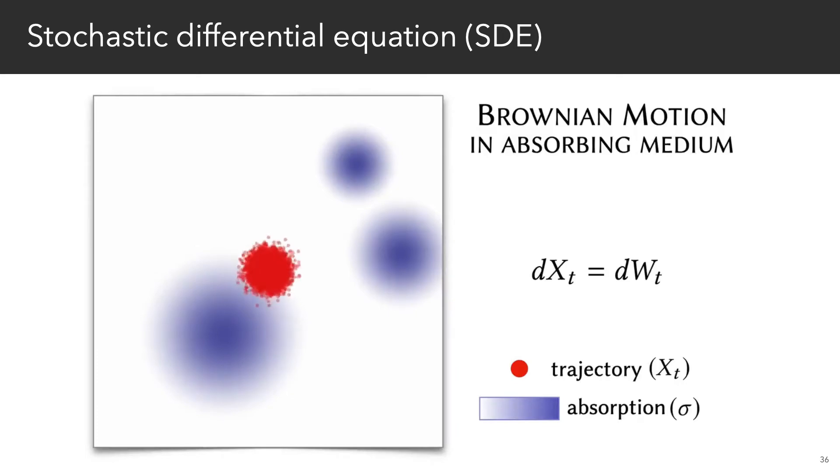We can also modulate the strength of jiggling via a function alpha. As alpha increases, things heat up and particles move faster. Finally, we can think about a random walker possibly getting absorbed in a background medium, like ink getting soaked up in a sponge. Here, sigma denotes the strength of absorption. It doesn't show up in the SDE itself, but it will be incorporated in just a moment.